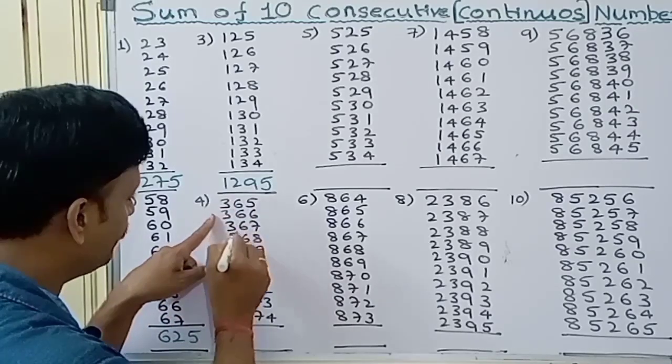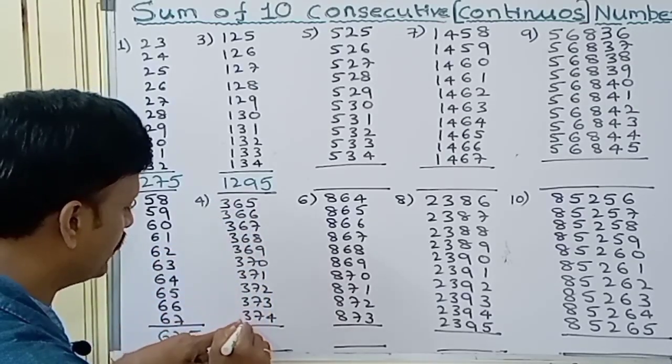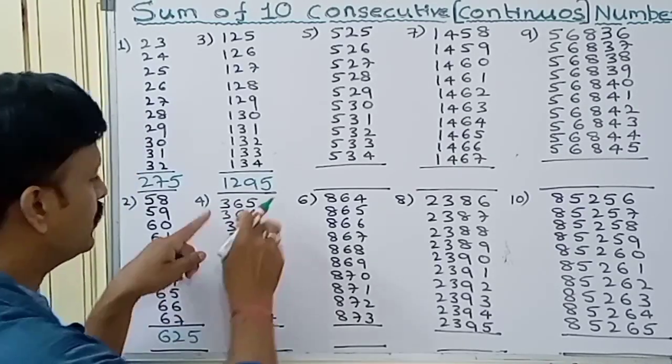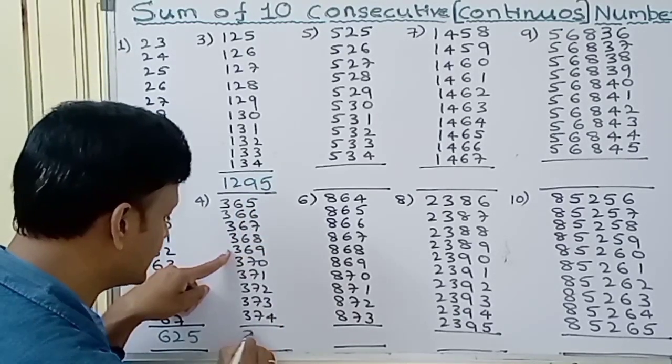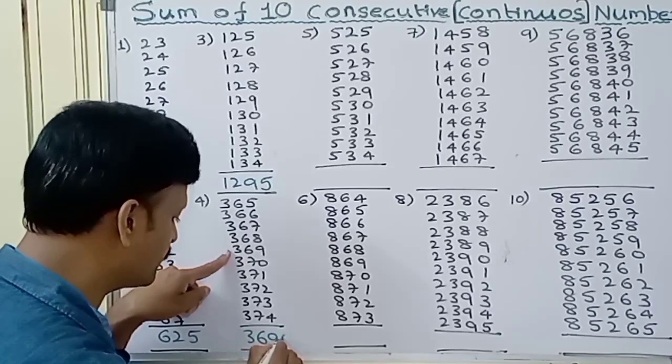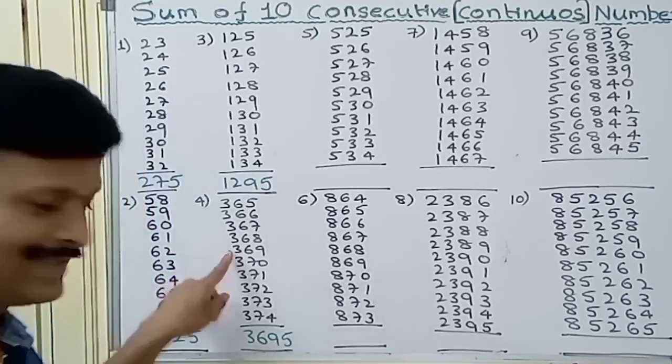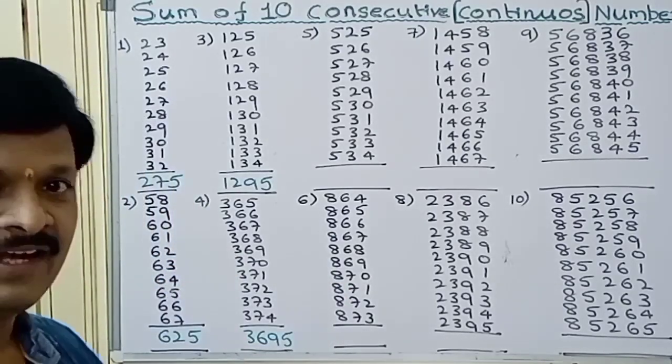Next, 365, 366, 367 and so on till 374. Let's count 1, 2, 3, 4, 5. The 5th number is 369. Write down 369 and put 5 in the units place. 3695 is the answer.